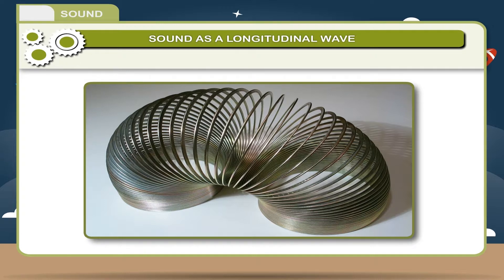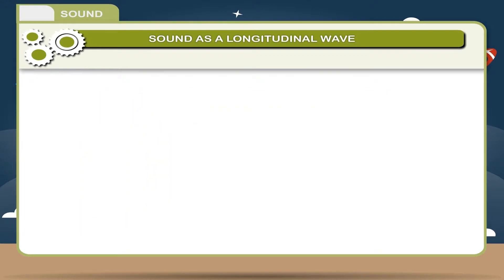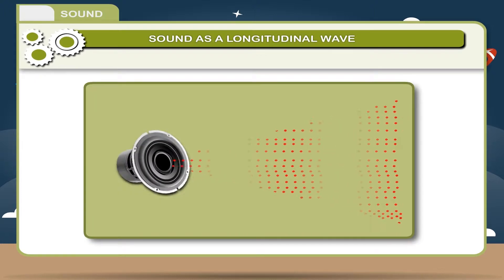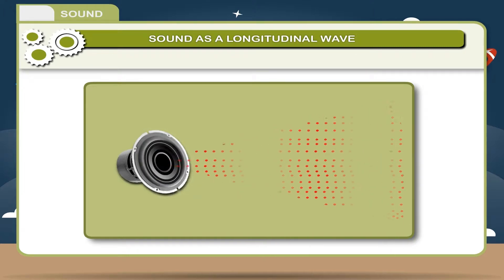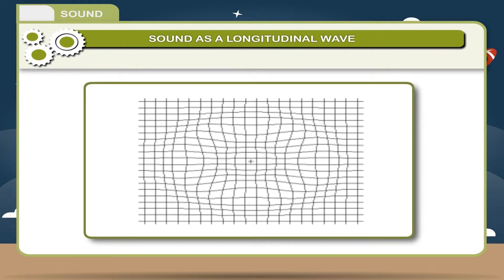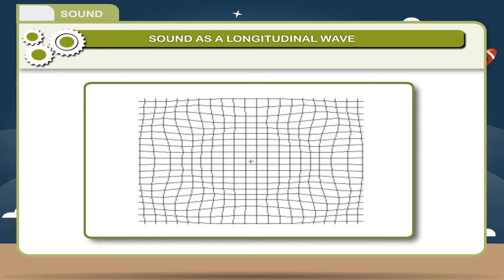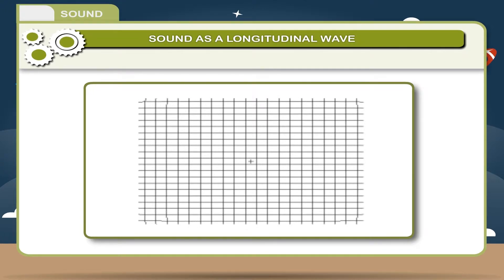A longitudinal wave can be created in a slinky if the slinky is stretched out in a horizontal direction and the first coils are vibrated horizontally. Sound waves in air and any fluid medium are longitudinal waves because particles vibrate parallel to the direction the sound wave moves. The result of such longitudinal vibrations is the creation of compressions (C) and rarefactions (R) within the air.